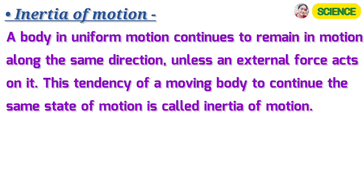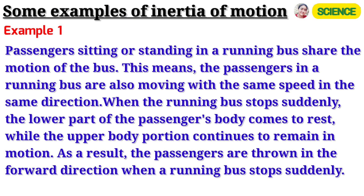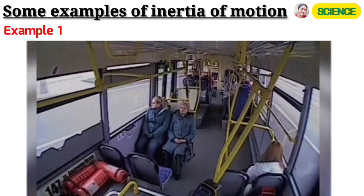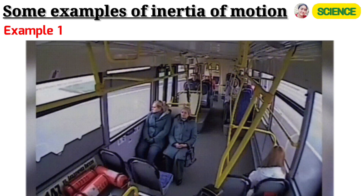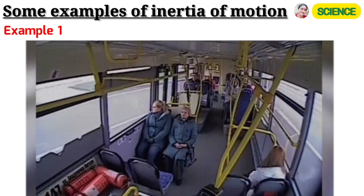The tendency of a moving body to continue the same state of motion is called inertia of motion. Some examples of inertia of motion. Example 1: Passengers sitting in a running bus share the motion of the bus. This means the passengers in a running bus are also moving with the same speed in the same direction.